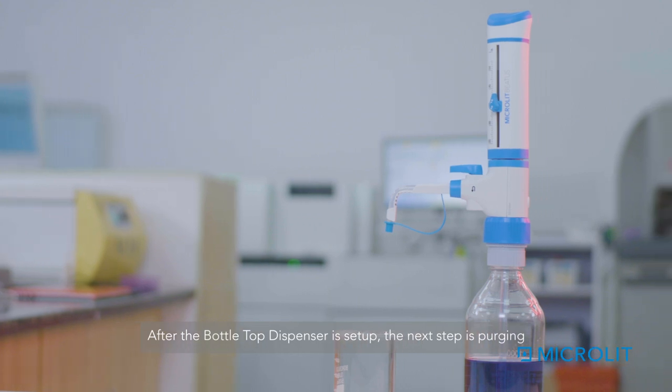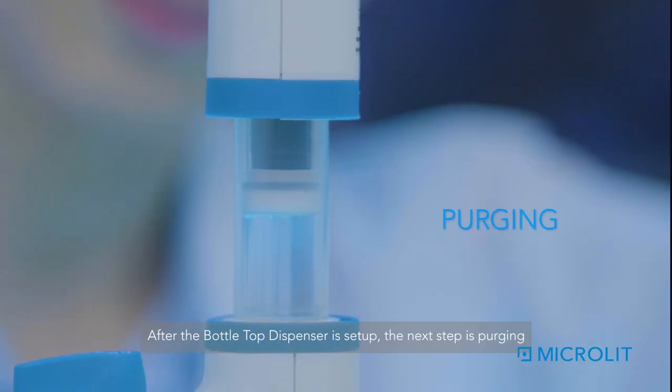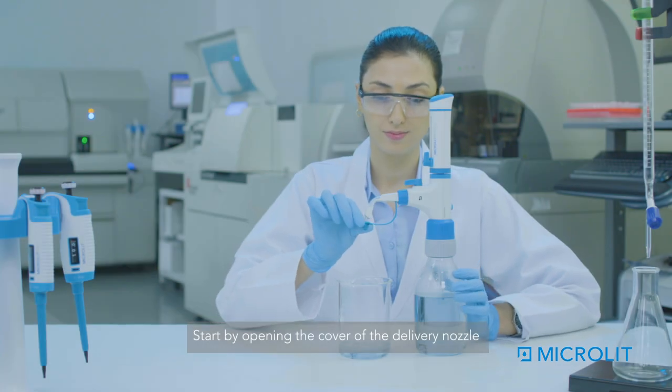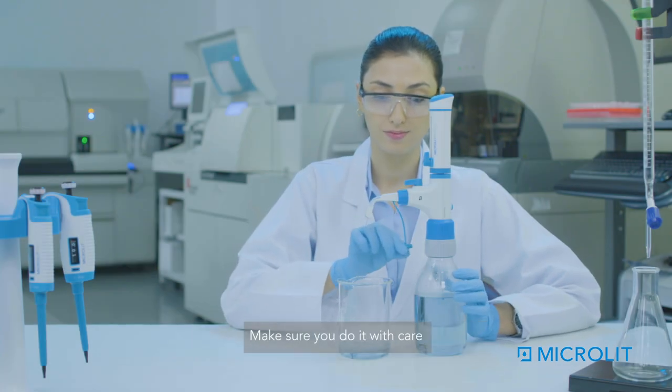After the bottle top dispenser is set up, the next step is purging. Start by opening the cover of the delivery nozzle. Make sure you do it with care.